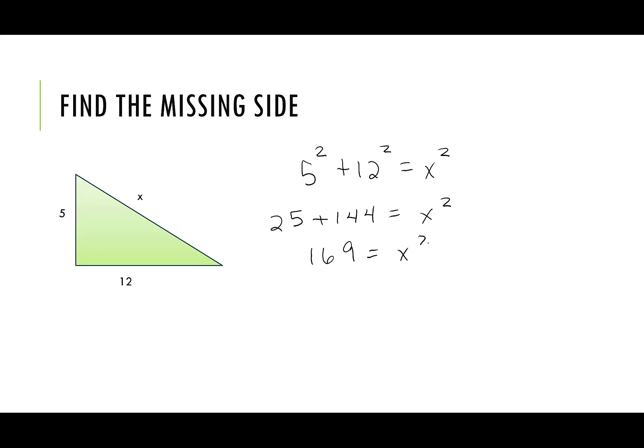And then we're going to take the square root of 169, and then that'll give us the square root of X squared. The square root of 169 is 13, so that is my hypotenuse. Notice that 13 is bigger than 5. It's also bigger than 12.